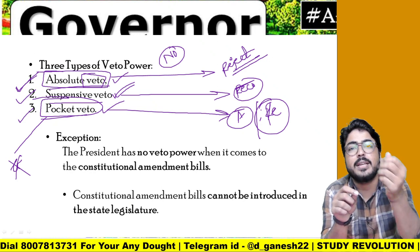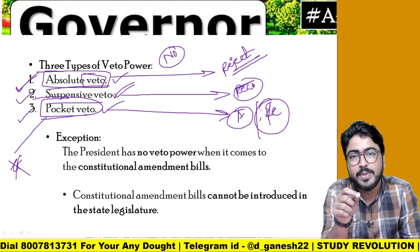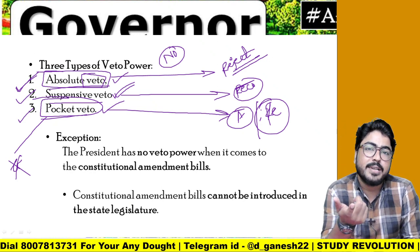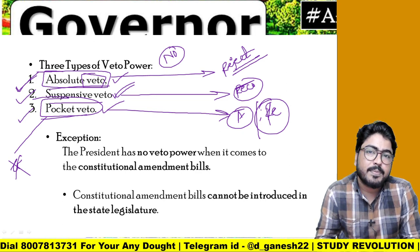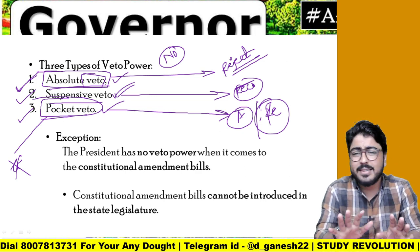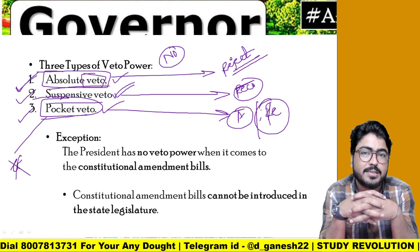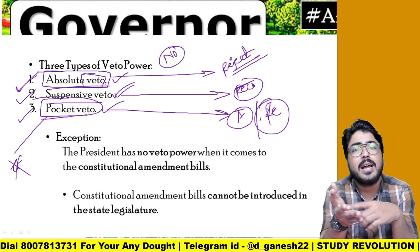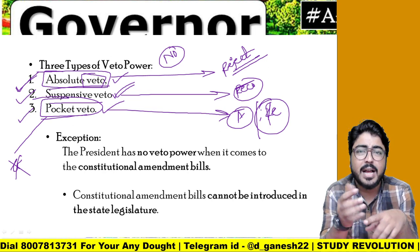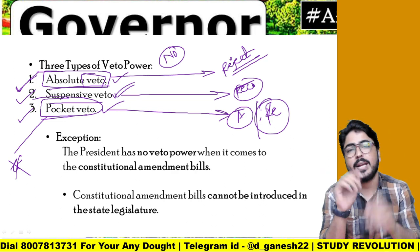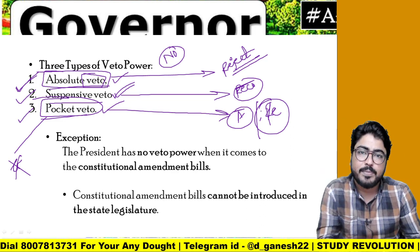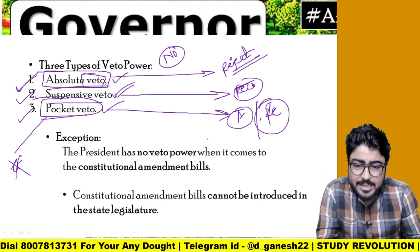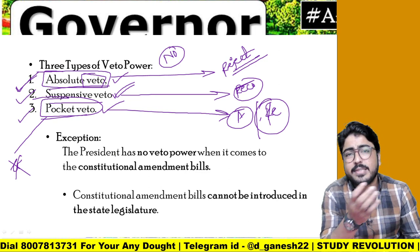Pocket veto means the bill is kept from the outside — when it comes to action, neither accepted nor rejected. It is simply not acted upon. However, there are some included provisions and exceptions to this.